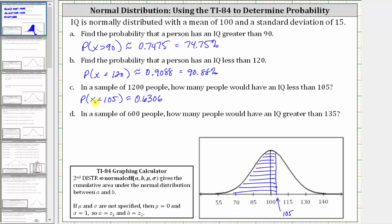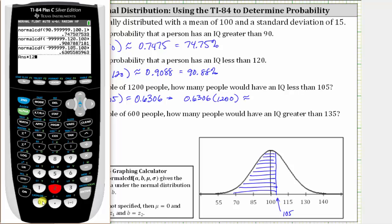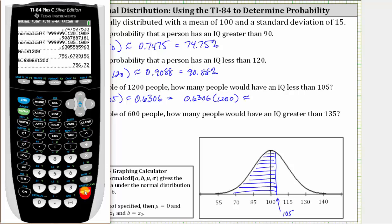Which means to find how many people in a sample of 1,200 have an IQ less than 105, we need to find 63.06% of 1,200. We take the decimal 0.6306 and multiply by 1,200, rounding to the nearest person. We can press times 1,200 to multiply the previous result by 1,200. The nearest person would be 757. Multiplying 0.6306 by 1,200 also gives approximately 757 people.